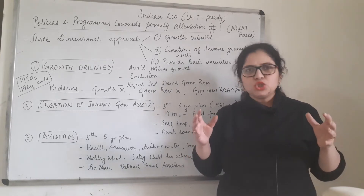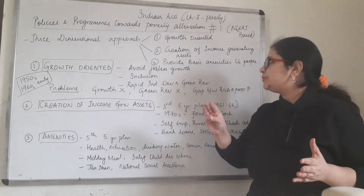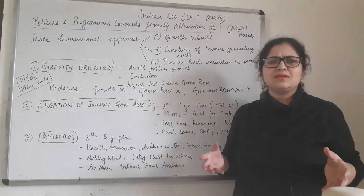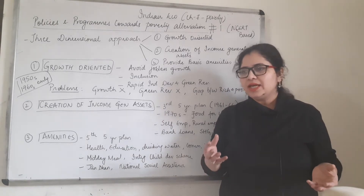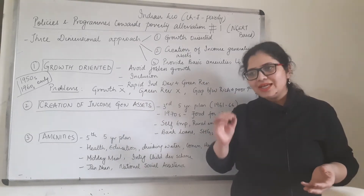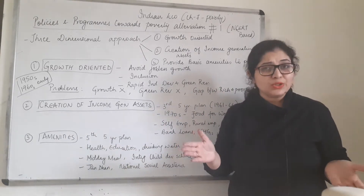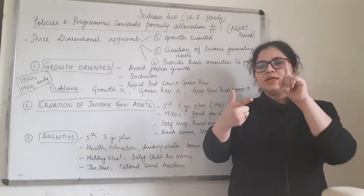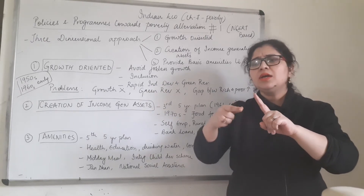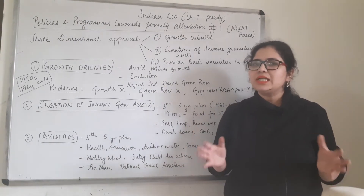In simple terms, the government would do something so that some people would gain income, and it wanted to build that system. The third approach was that every citizen should have some basic quality of life — respectfully living in a good way. So they took a three-pronged approach: growth focused on GDP and national income; income generation through assets and self-employment creation; and amenities and facilities so that the basics are at least in place. These approaches started with the five-year plans.